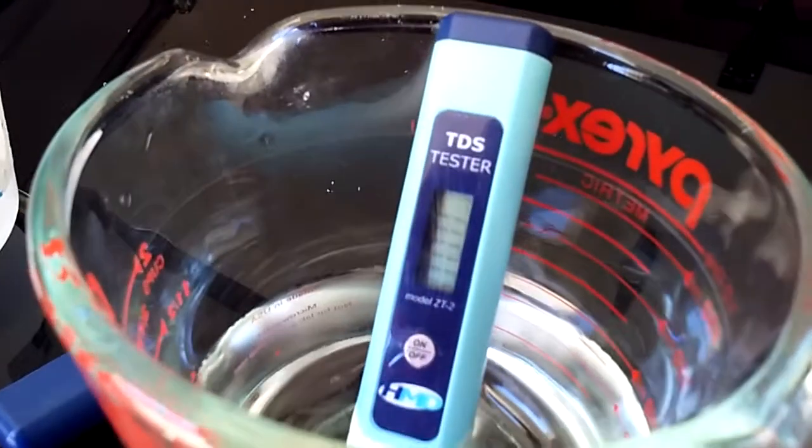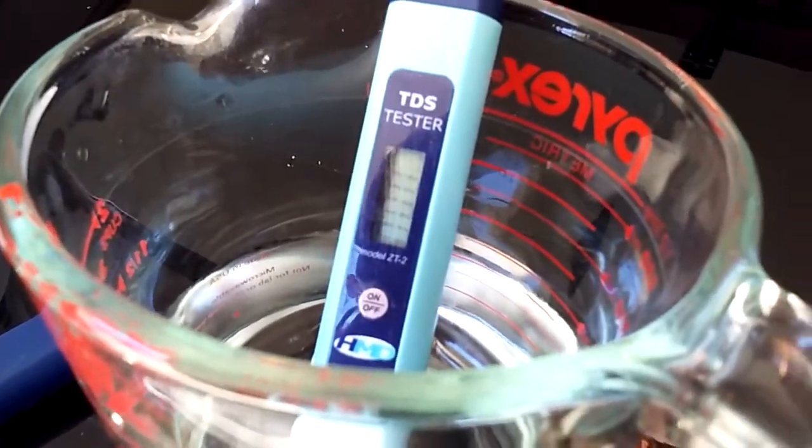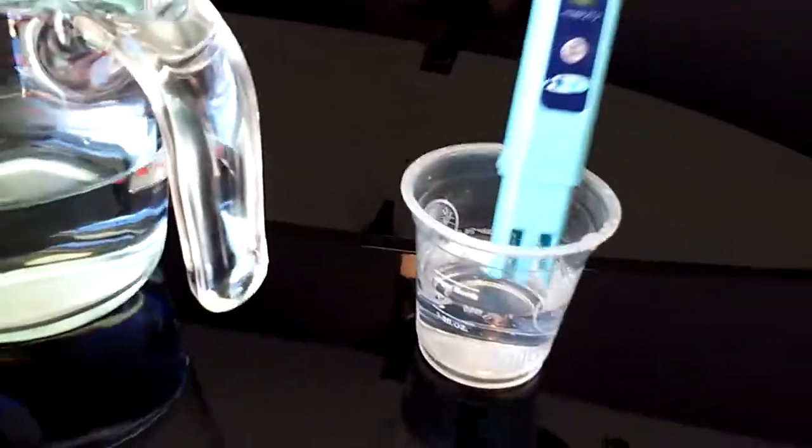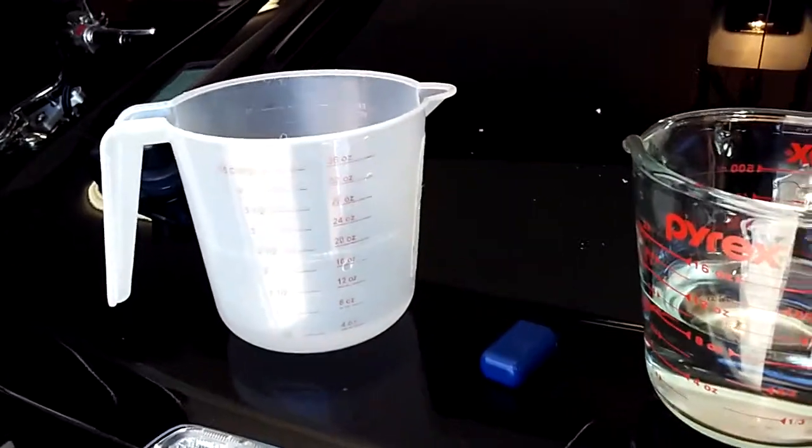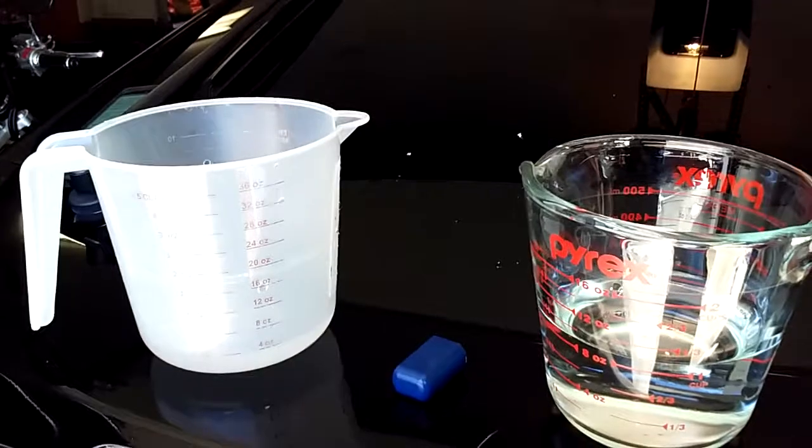Get that light—zero parts per million. All right, take it right out, put it in our snow water. Get that light—13 parts. Snow water is actually better than Taylor, South Carolina's tap water, not by much.